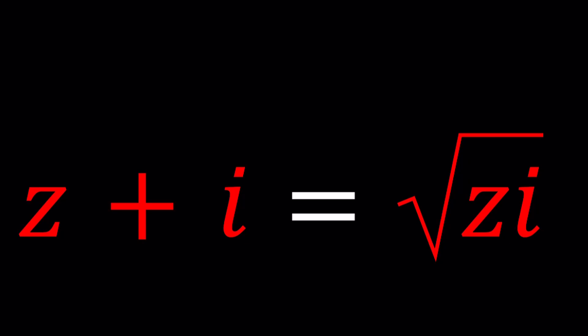We have z plus i equals the square root of zi and we're going to be solving for z. We've done similar problems before, like z plus i equals zi, and z plus i to the second power equals zi. This is similar to those problems and you'll probably recognize the next step which is squaring both sides.